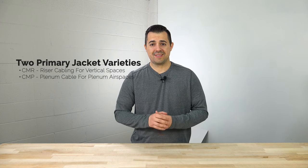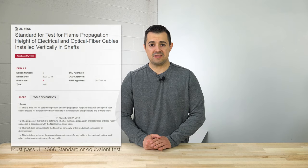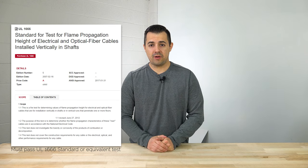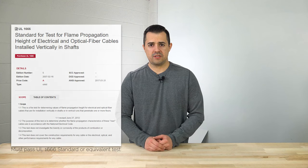First we need to look at the terms riser and plenum and see what they mean. The term riser usually refers to the vertical space, like a cable duct, used by telecommunications infrastructure to connect floors together. You can see in this diagram that the cable duct allows the cabling to connect each floor. The CMR or riser cabling installed in this area will have a PVC jacket that passes the UL 1666 standard, which tests the flame propagation height of the cable — that is, how fast flames will travel up the jacket.